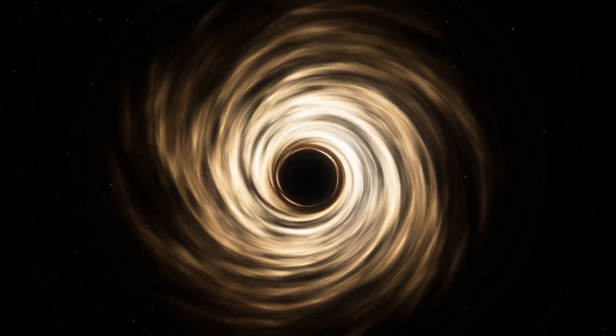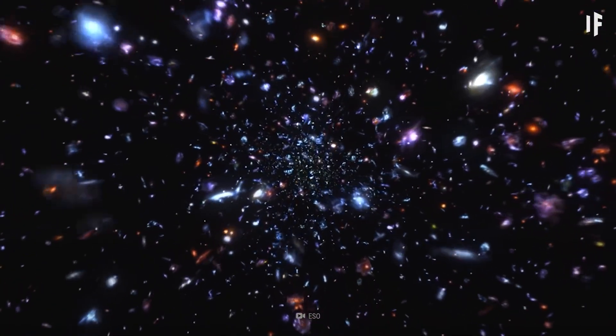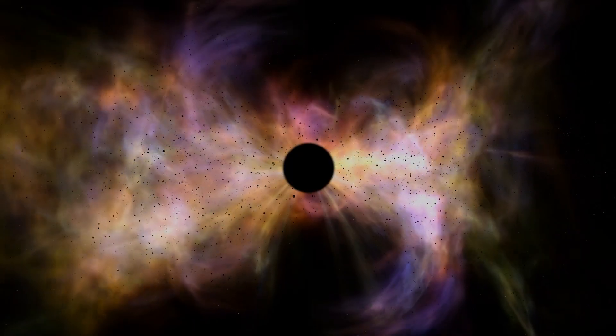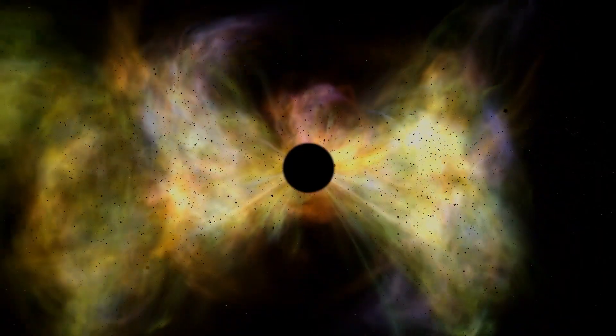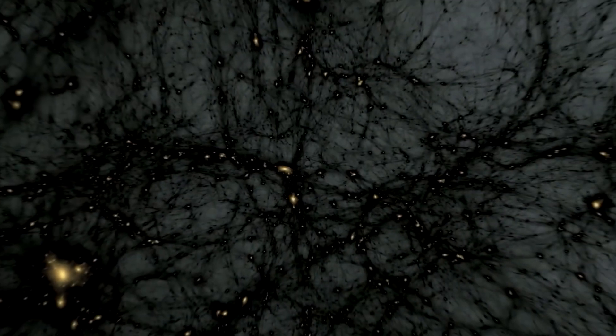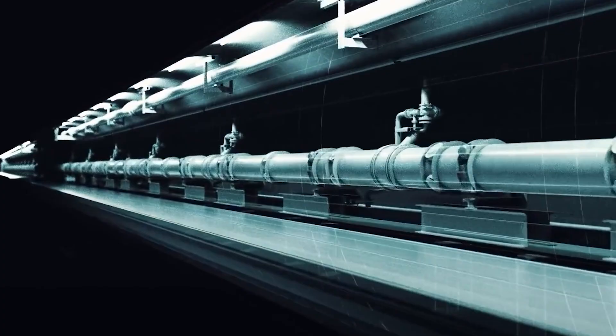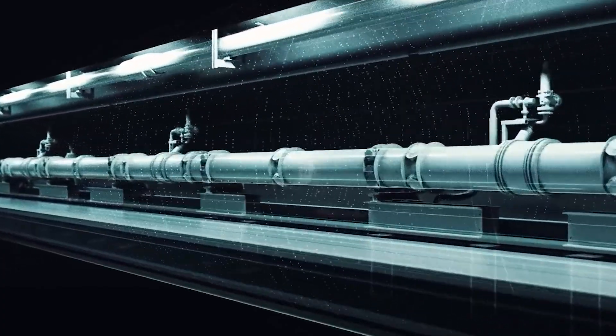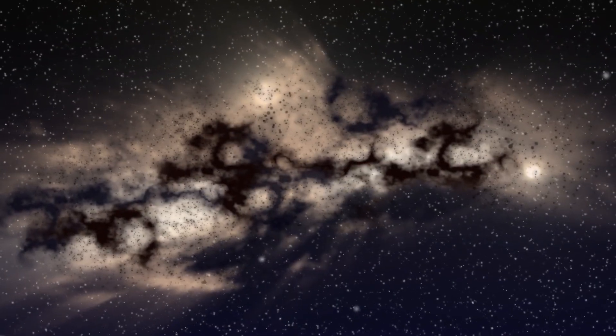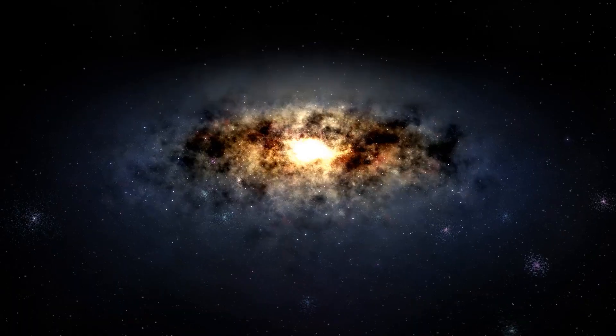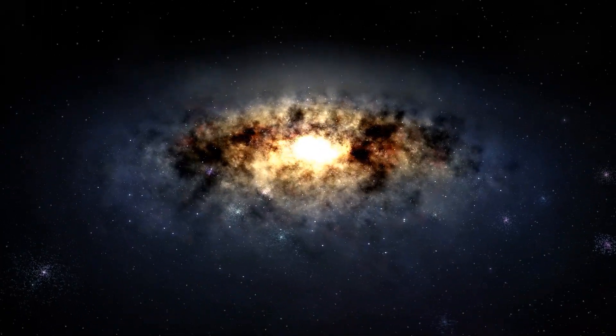Tiny black holes as dark matter. One provocative proposal argues dark matter comprises ancient mini black holes stemming from cataclysmic events in our universe's earliest instance. According to some physicists, quantum fluctuations near the Big Bang's singularity could have seeded bubbles of concentrated mass that collapsed into black holes lighter than an atomic nucleus.